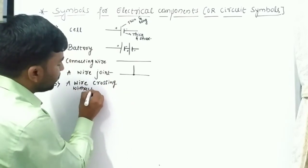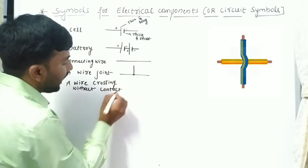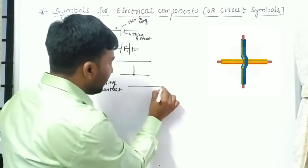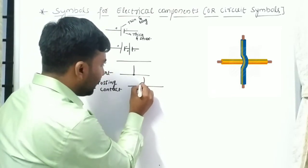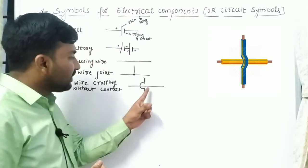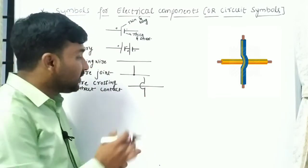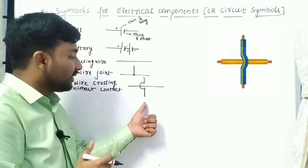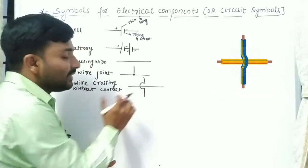Next is a wire crossing without contact. Here one wire is crossing another wire without joining it — it is passing without contact. At that time we use a curved bridge symbol to represent this.